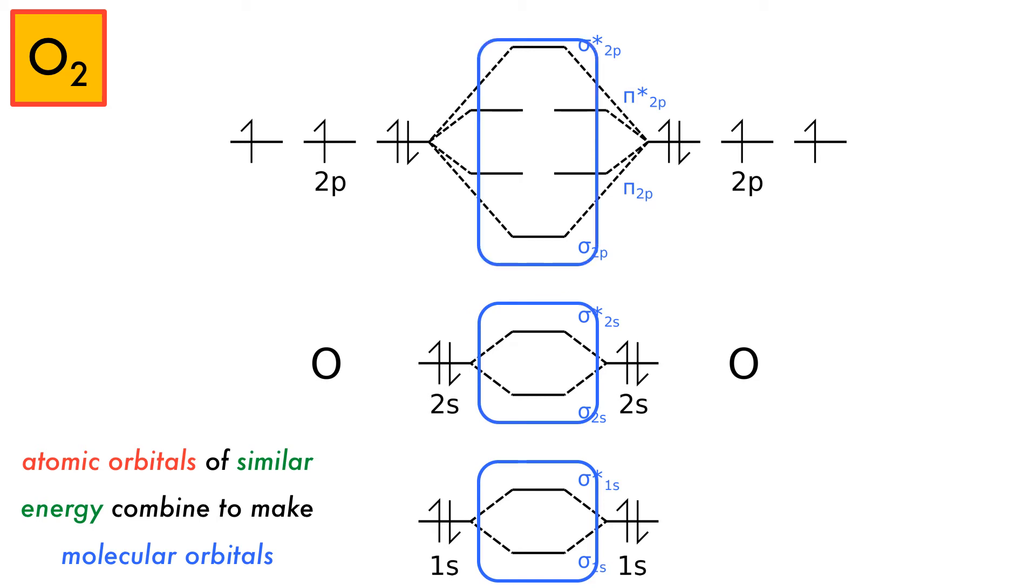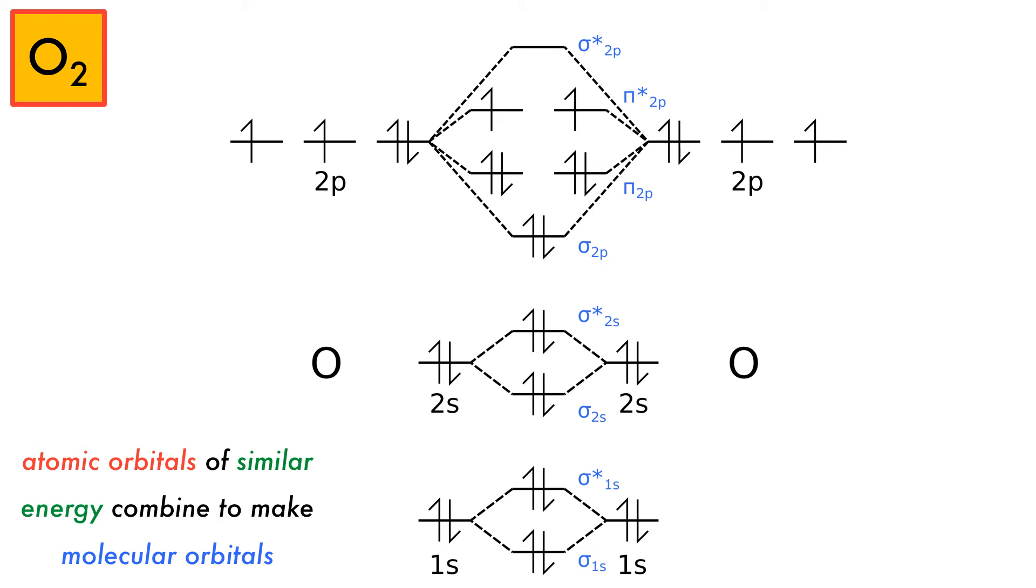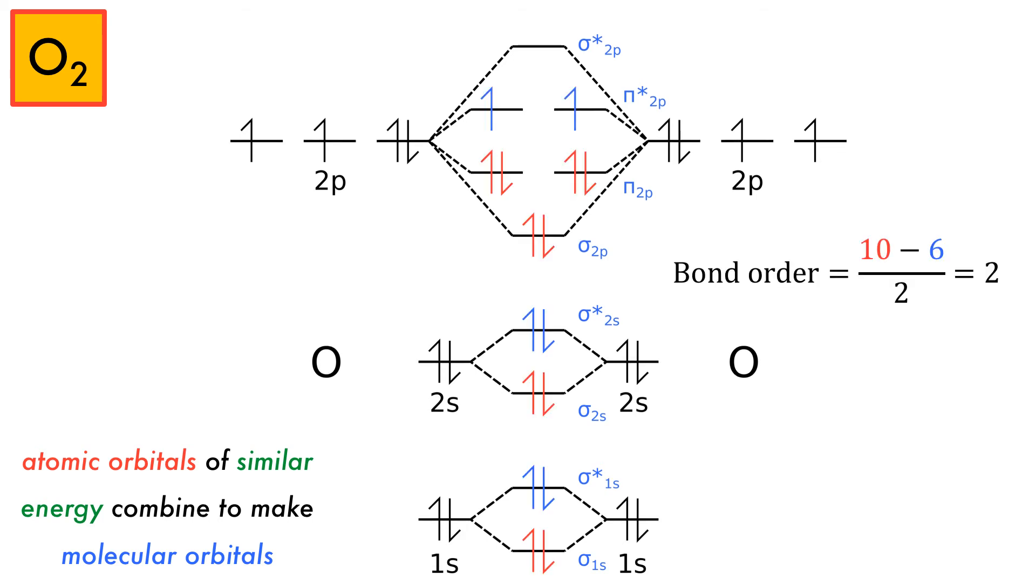For the 2p orbitals, we now have six total p orbitals to combine. For this we obtain a sigma and sigma star as before, but now we also have pi and pi star orbitals that form the basis of pi bonds. The molecular orbitals are then filled from the atomic orbitals from lowest to highest energy. The filling of the molecular orbitals allows the calculation of the bond order, giving a value of 2. This leads to the double bond of oxygen.